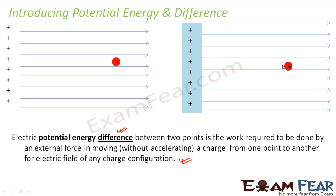Let's have a quick review once again. The charged particle by itself will always try to move towards the right because positive charges repel each other. Now if you want to move it towards the right, you will apply an external force. So when you apply an external force, some work is done.